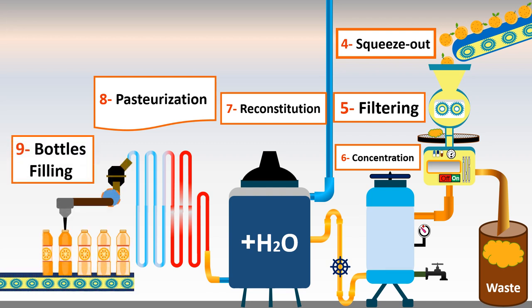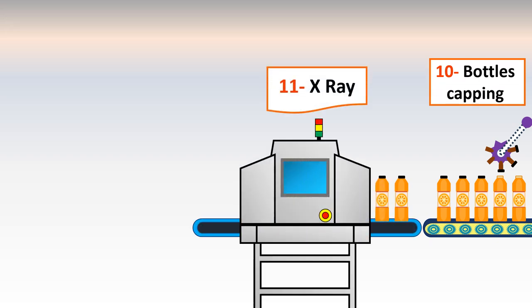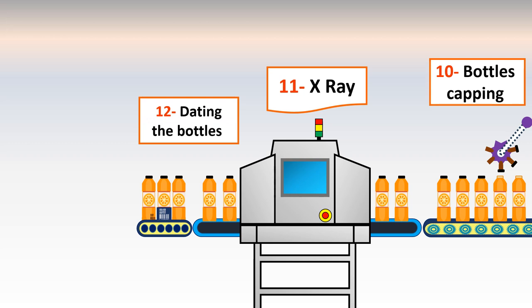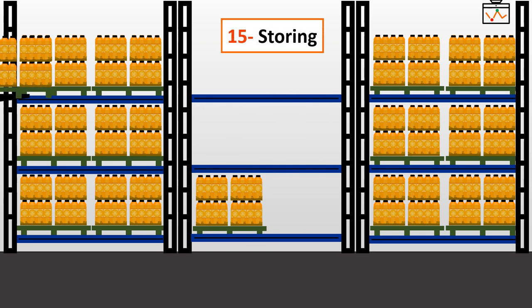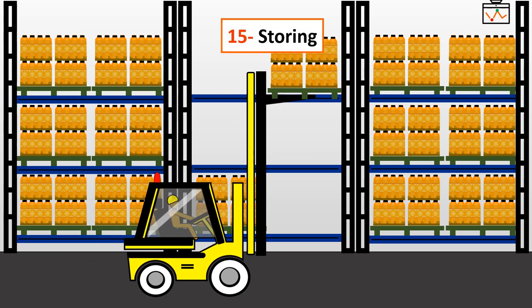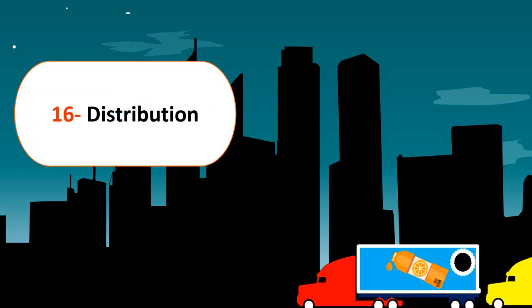Step 8 is pasteurization — applying heat then sudden cooling to kill any microorganisms. Note the difference in flow diagram shapes: Step 5 (filtering) is a rectangle, while Step 8 (pasteurization) uses a document shape. Step 9 is bottle filling, Step 10 is bottle capping, Step 11 is X-ray inspection to check for residues, Step 12 is dating the bottles, Step 13 is packing, Step 14 is arranging on pallets, Step 15 is storage with temperature control in warehouses, and the final step is distribution.